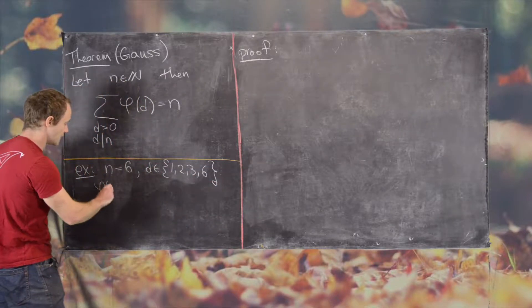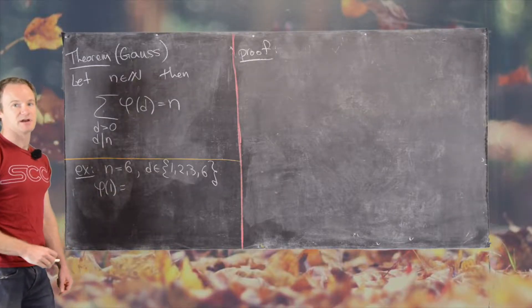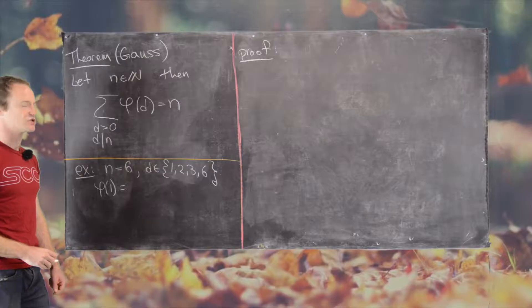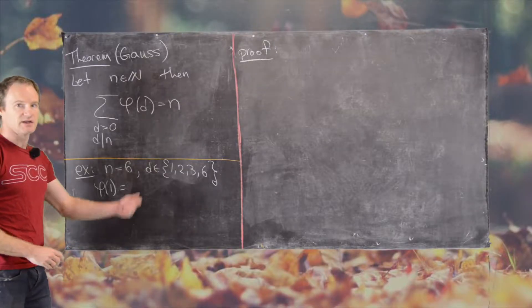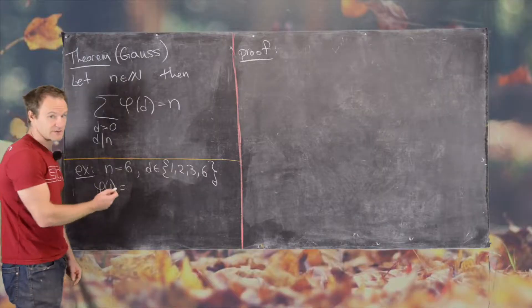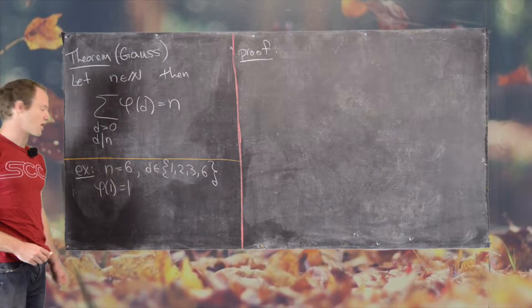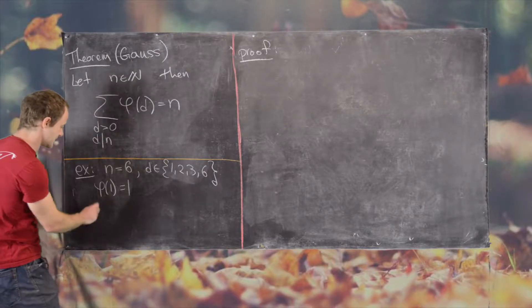So now let's look at phi of 1. Remember the Euler-Phi function counts the number of relatively prime integers between 1 and n. So phi of 1, that will be the number of relatively prime numbers between 1 and 1. So there's only 1, relatively prime with the number that's in there.